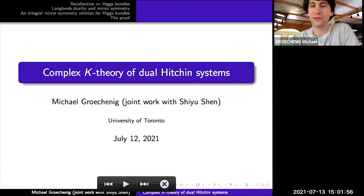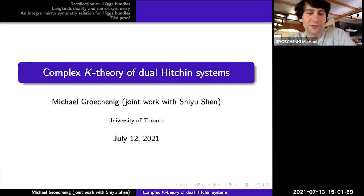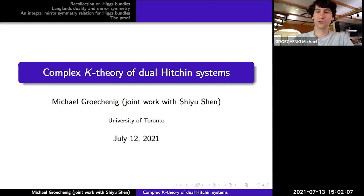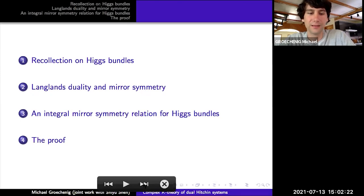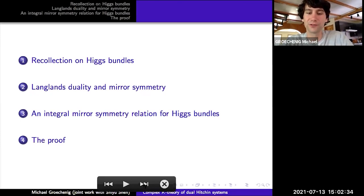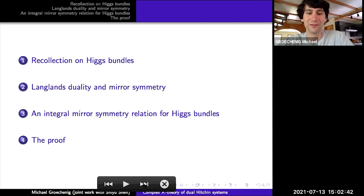Thank you very much for the invitation. I'm going to talk about complex K-theory of dual Higgs bundle systems — this is joint work in progress with Xiu Shen. The talk has four parts: first, the basics of Higgs bundles and moduli spaces; second, a connection with Langlands duality and mirror symmetry; third, whether there is an integral version of this mirror symmetry relation; and fourth, an overview of the proof.